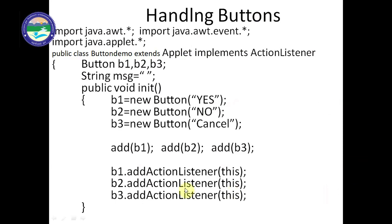For mouse events we write addMouseListener or addMouseMotionListener. For checkbox events we use addItemListener. For key events we use a key listener, and for text events a TextListener. Different types of listeners are used for different event types. In this lecture I am explaining only the button event — only the ActionListener.